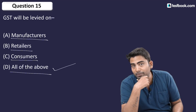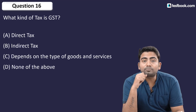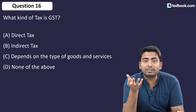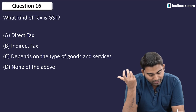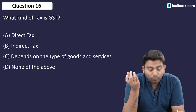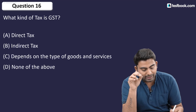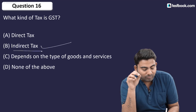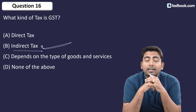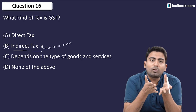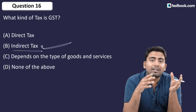What kind of tax is GST — direct, indirect, or dependent on types of goods and services? GST is an indirect tax. The reason: indirect tax means it is levied on one party but paid by another. GST is also levied on one party and paid by another.